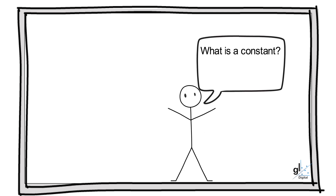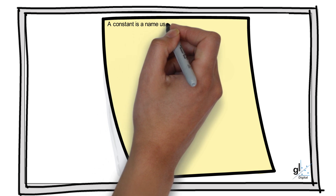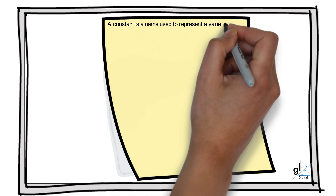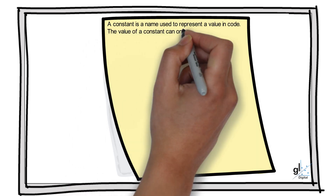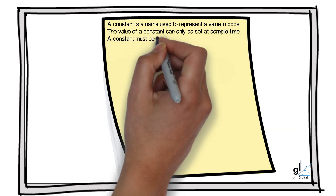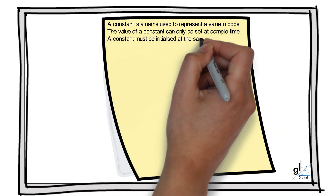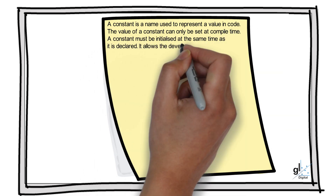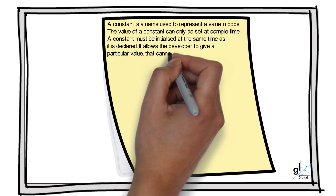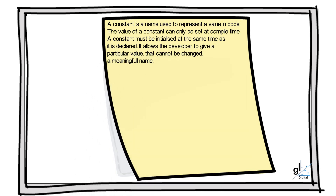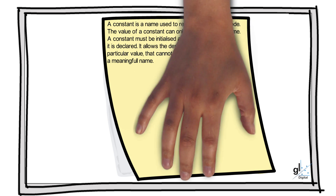What is a constant? A constant is a name used to represent a value in code. This sounds a lot like a definition for a variable, but the fundamental difference is that the value of a constant can only be set once at compile time. A constant must be initialized at the same time as it is declared. It allows the developer to give a particular value — a value that never changes — a meaningful name.